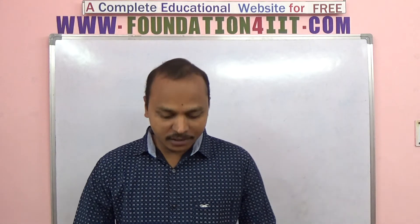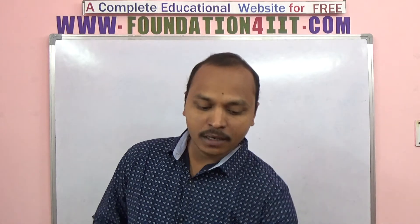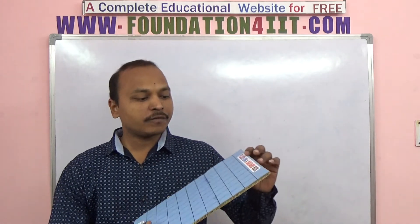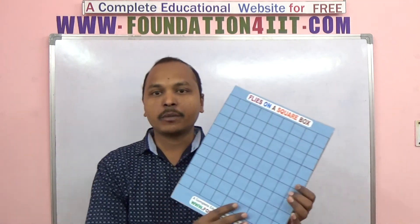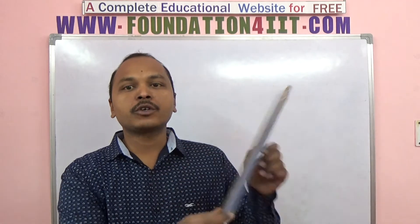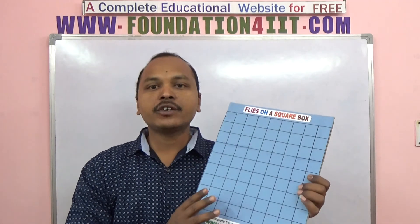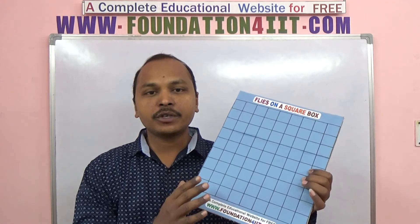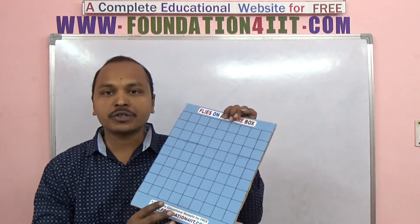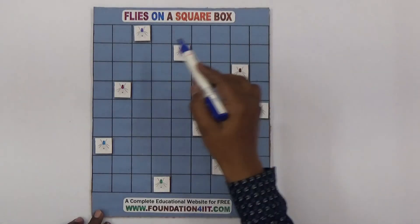Welcome to the educational channel. In this video I'll explain one simple puzzle you can use as a project. There are flies on a square box — I've prepared a cardboard to make this. It's a nine by nine grid where we need to keep some flies, and by changing their positions they must follow the same rule.